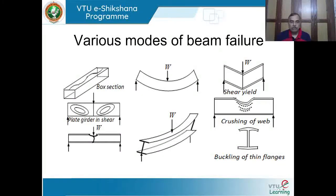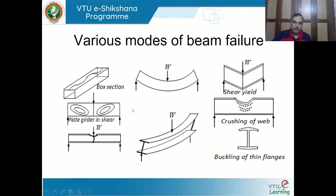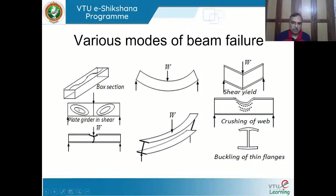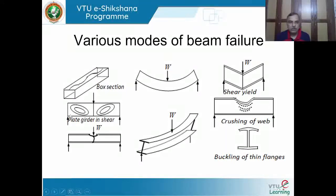For rolled sections, depth goes up to 600 mm; beyond that, we need to fabricate the section. For a plate girder with 2-meter depth and 10-15 mm web thickness, the depth-to-thickness ratio is so large that the web undergoes shear buckling near the support where shear force is substantial, while maximum bending moment is at the center. Full plastification of the section does not happen - the element undergoes premature failure.